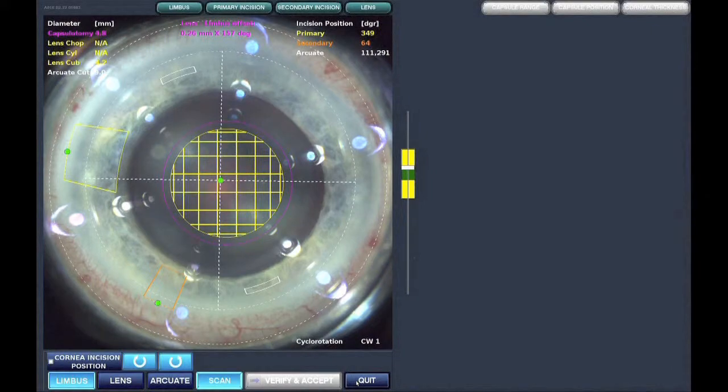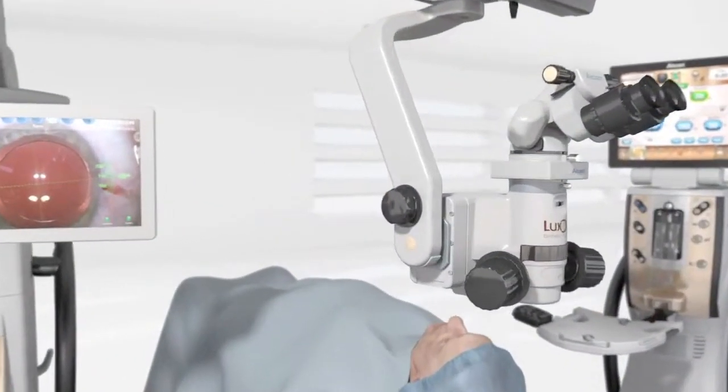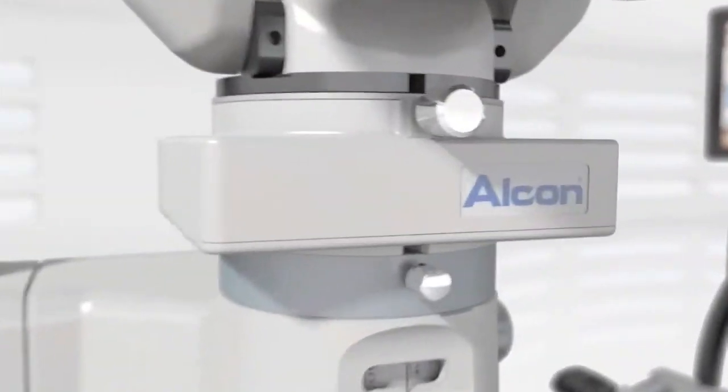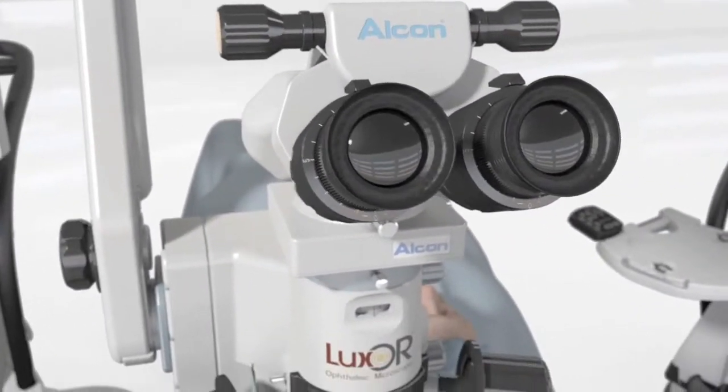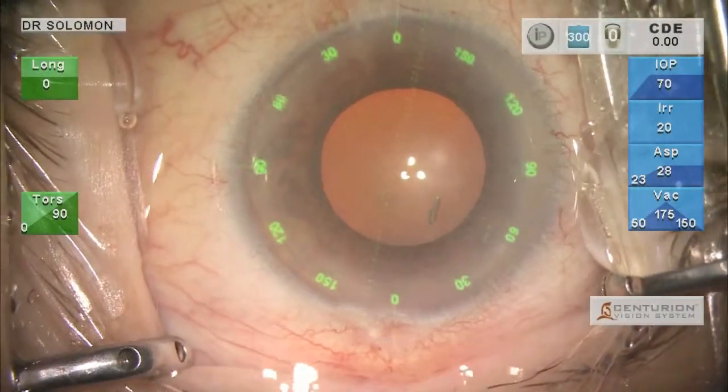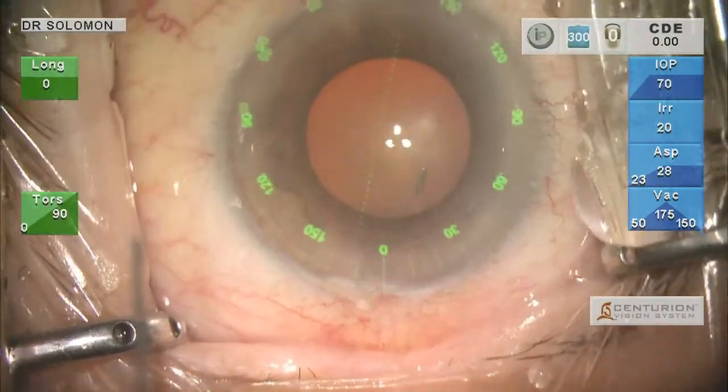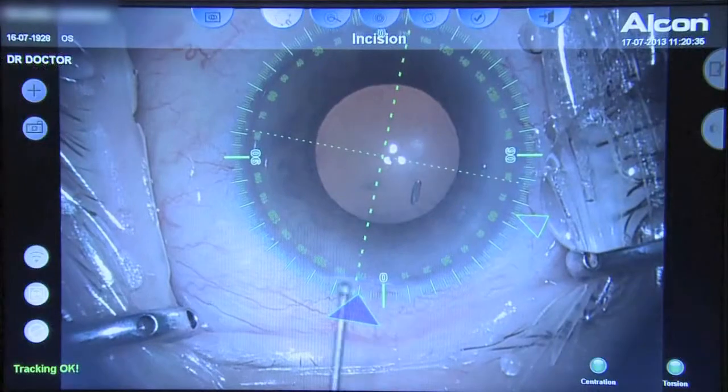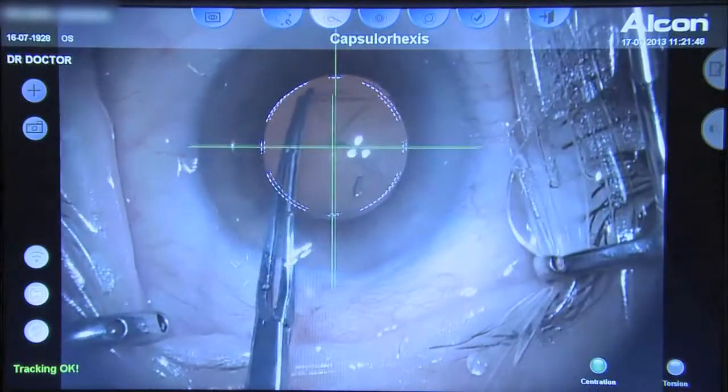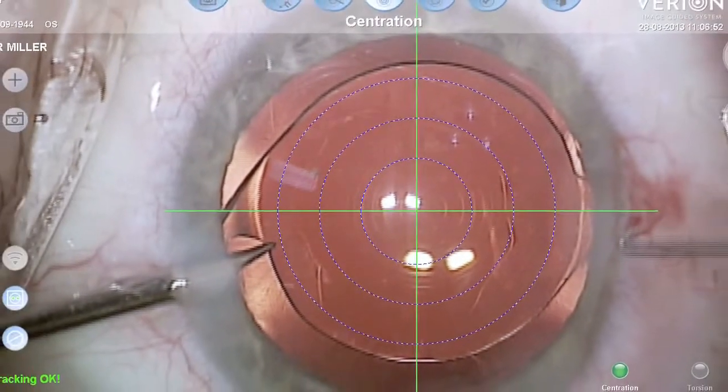Working in concert with a microscope integrated display, the Veryon digital marker also provides real-time tracking overlays through the optics of a surgical microscope. These computer-generated overlays offer a new measure of consistency and control for every surgical step, including an incision guide, capsular axis guide, centration guide for multifocal IOL positioning, and toric alignment guide for lens positioning.